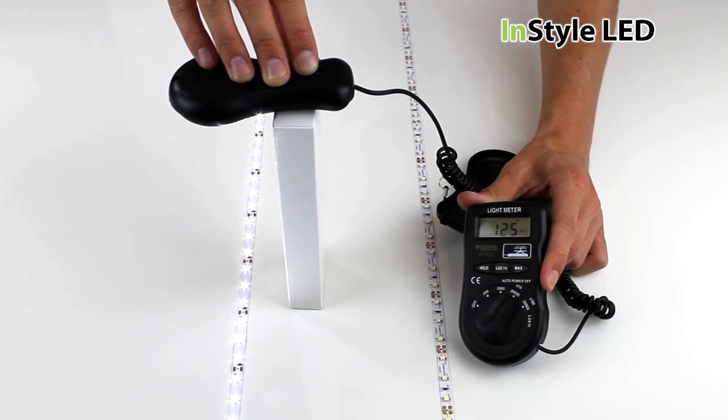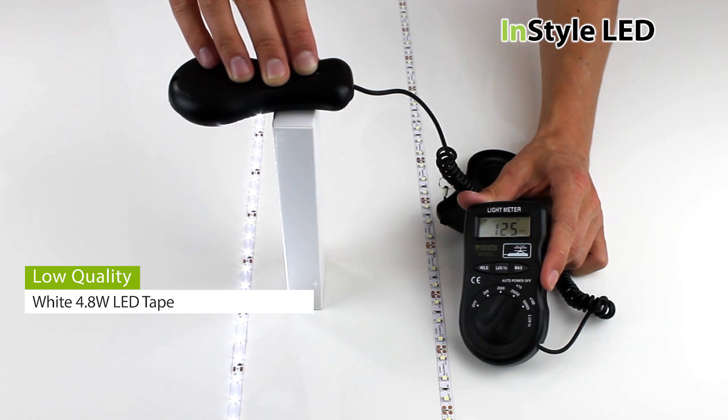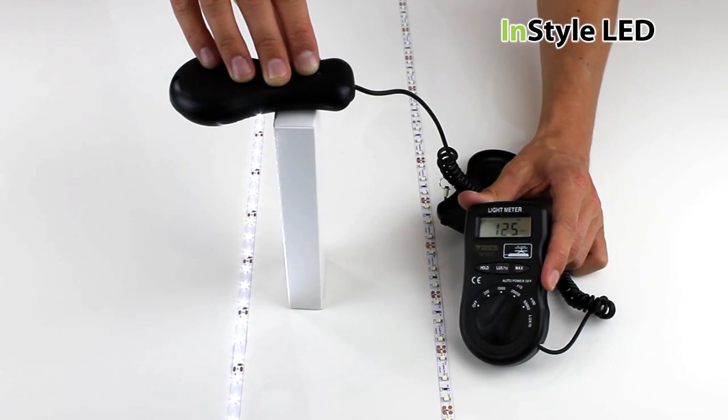Firstly we will show the differences in brightness. Light output is measured in lux and lumens. We can measure the lux output of both LED strips by using the same setup.